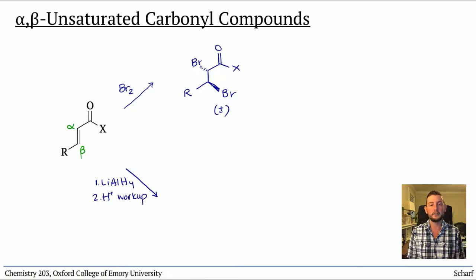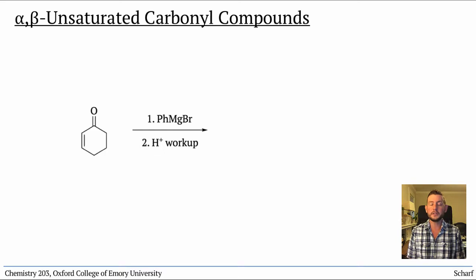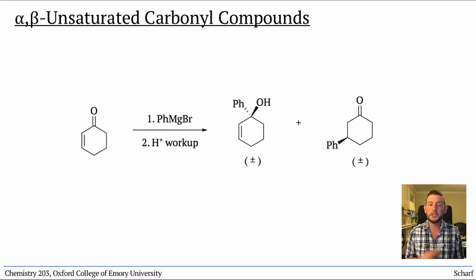Lithium aluminum hydride, for instance, reduces the carbonyl group just like we might have predicted. But, if I treat an alpha-beta unsaturated ketone with a nucleophilic Grignard reagent, followed by an acid workup, I get two regioisomeric products.